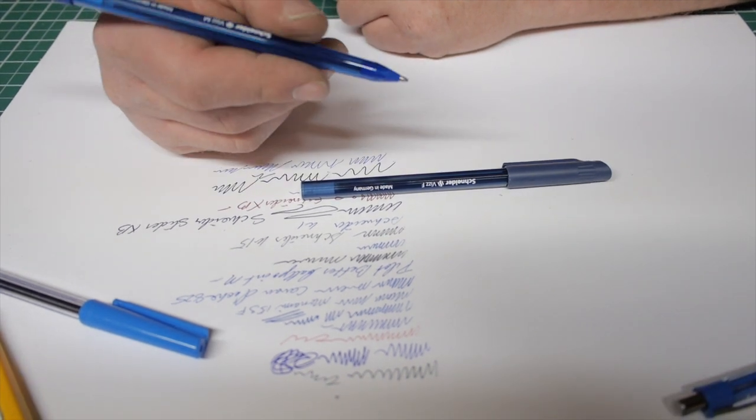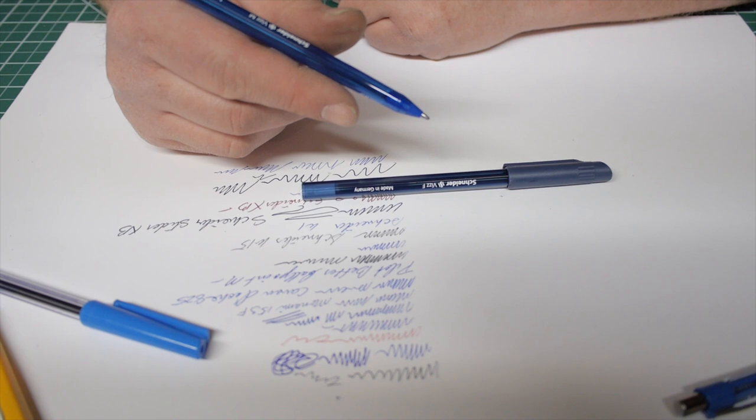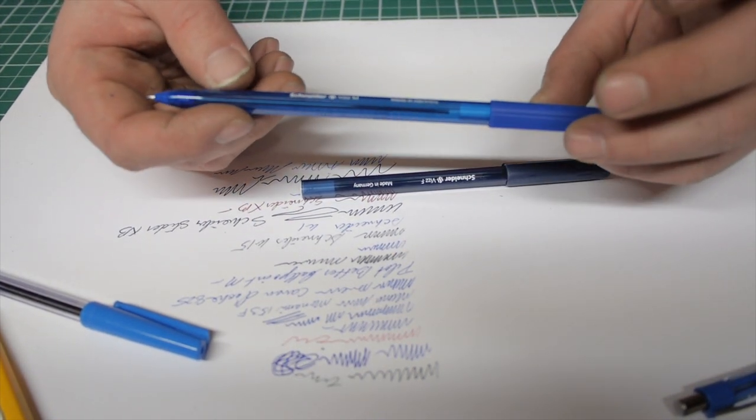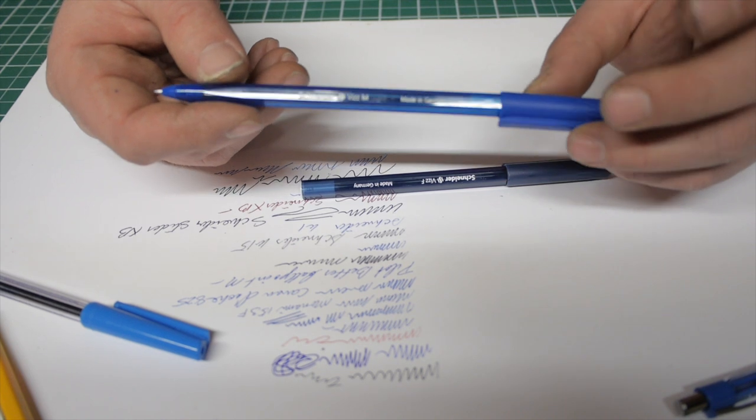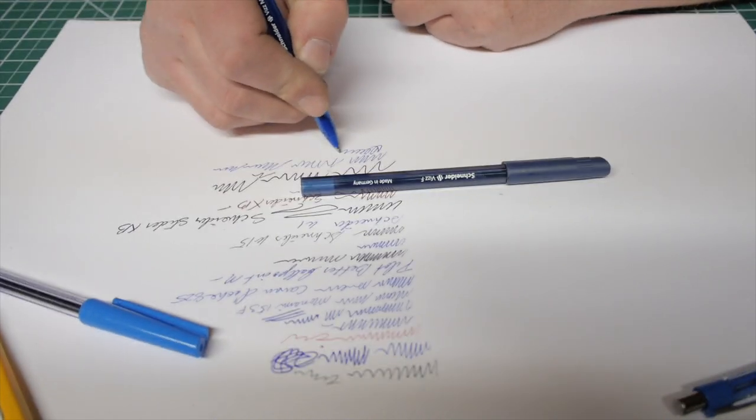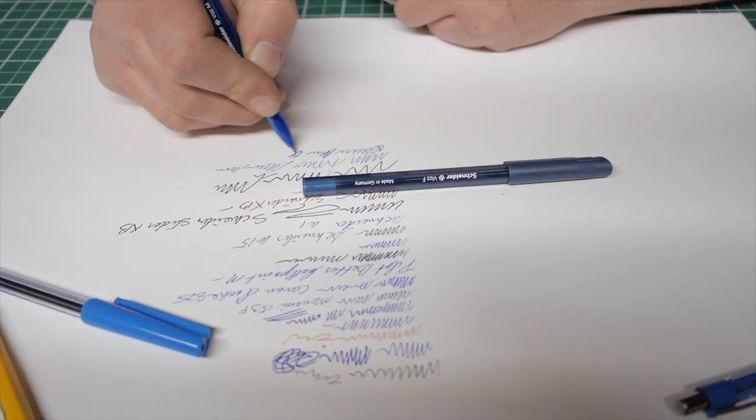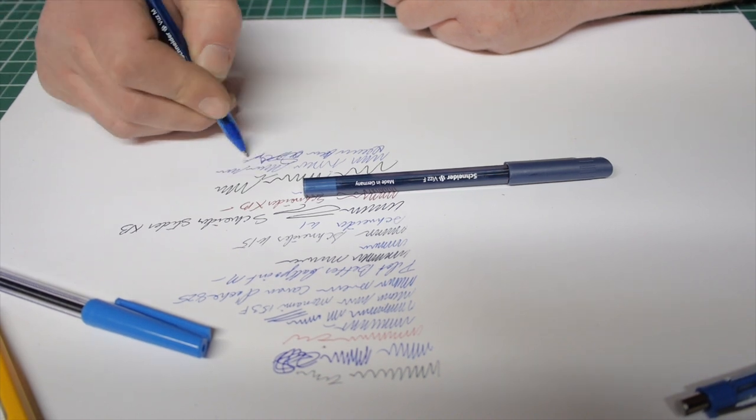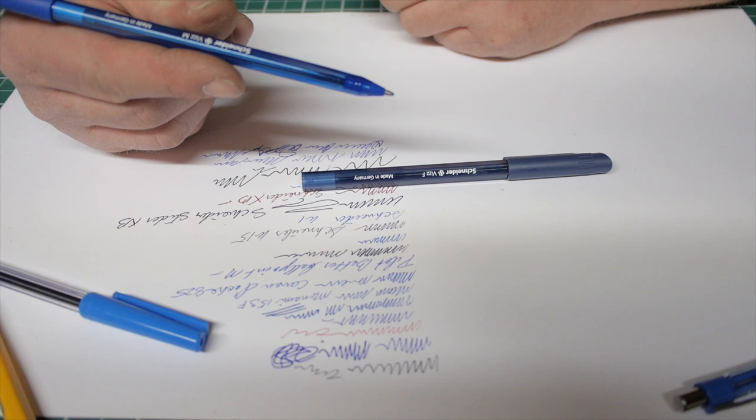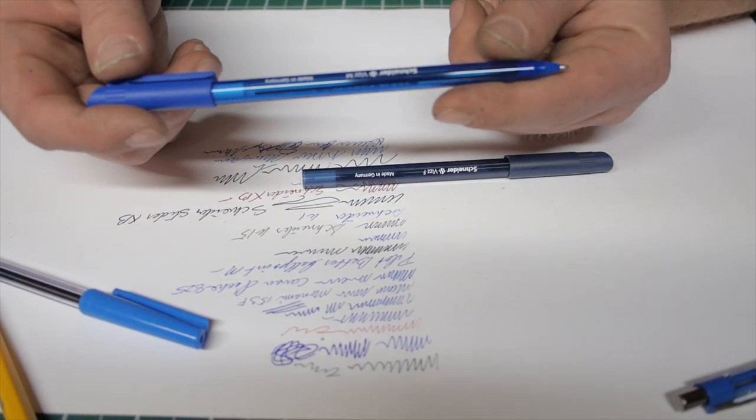And if you're looking for the smoothest ballpoint of all time, this thing beats like a Jetstream. It's almost a gel pen. I don't know how long they will last, and I also find that the ink is a little blobby. Let's see if I can get it to do that. Yeah, you can kind of see. I don't know. When I'm writing with it, it makes some blobs, so I don't really love it. But this is a really incredible pen.